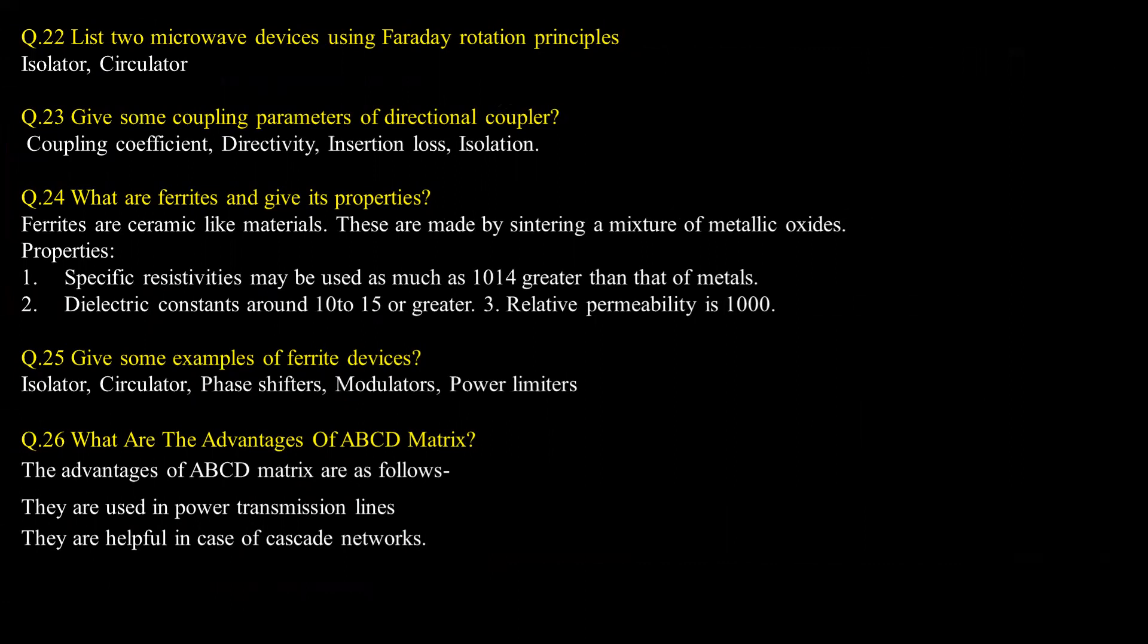Give some coupling parameters of the directional coupler: coupling efficiency, directivity, insertion loss, isolation. What are ferrite and give its properties? Ferrites are ceramic-like materials made by sintering a mixture of metallic oxides. Properties: specific resistivities may be as much as 10^14 greater than that of metals; dielectric constants around 10 to 15 or greater; relative permeability is 1000.